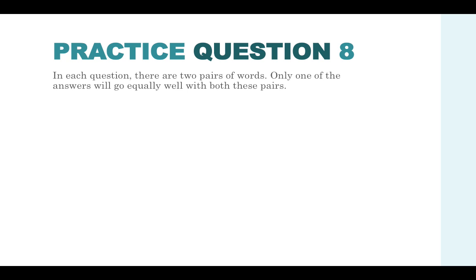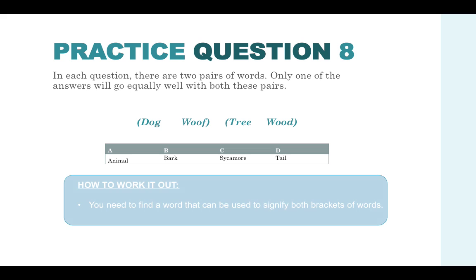Practice question eight. In each question there are two pairs of words. Only one of the answers will go equally well with both of these pairs. You've got dog and woof in the first pair and tree and wood in the second pair. The answer options are animal, bark, sycamore or tail. You need to find a word that can be used to signify both brackets of words. What we mean by signify is how these words are closely related or how another word could be used to imply the same thing.